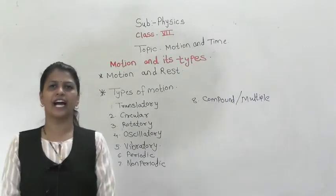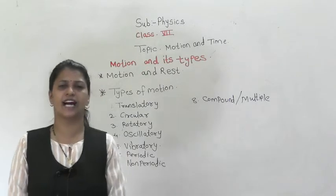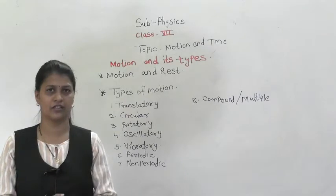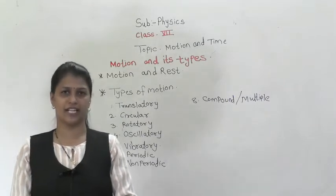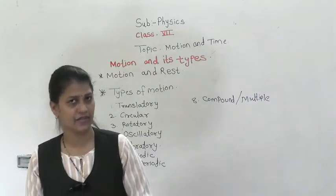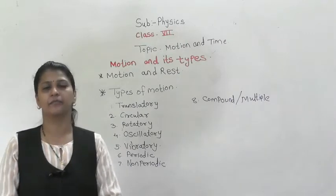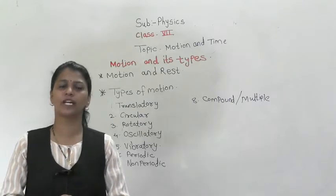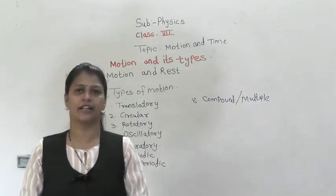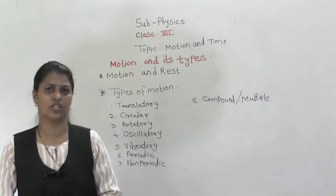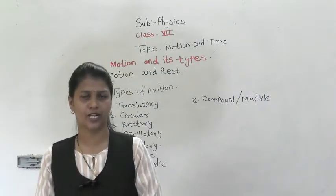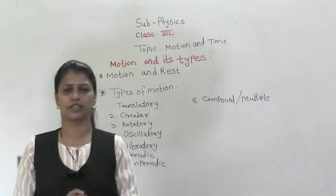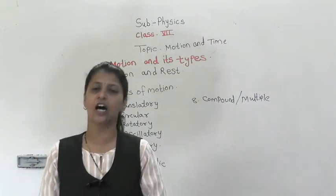We have already discussed in class 6 what exactly motion is. Some students may say that a moving object is called motion. But in physics, an object is said to be in motion when it is moving with respect to a stationary object.